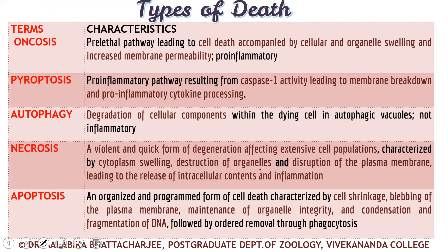Following the discovery of apoptosis, several forms of cell death have been identified. The first is autophagy — degradation of cellular components within the dying cell, forming small vacuoles. The second is necrosis — a traumatic, violent, and quick form of degeneration affecting extensive cell populations. For example, if you bang your head, the resulting reddish scar shows that cells suffered traumatic death, initially appearing red then turning bluish.